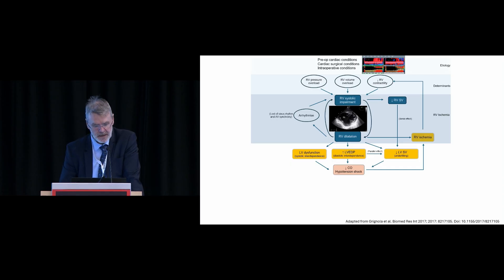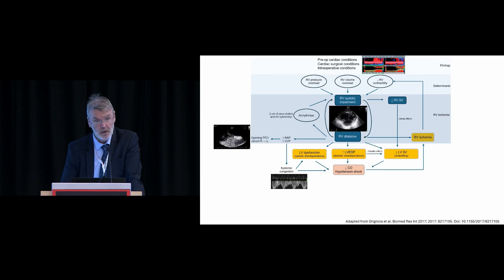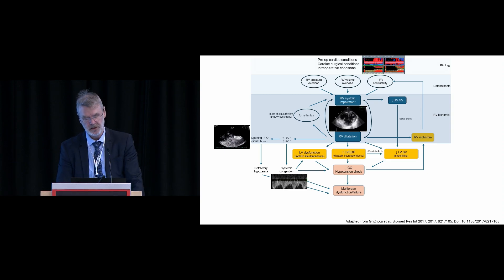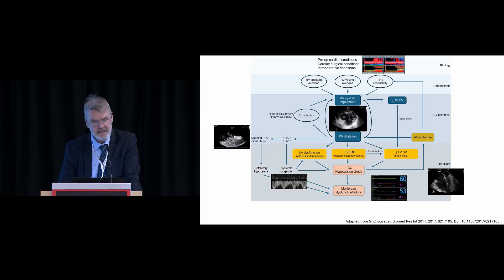Other things will happen in those patients. As right atrial pressure increases, in about one in five patients there will be an opening of the PFO and hypoxemia. Additionally, with the rise in central venous pressure, you will have venous congestion leading to portal hypertension, and at this point — with the trifecta of hypoxemia and venous congestion — you end up with multi-organ failure, brain desaturation: this is what we call right ventricular failure.